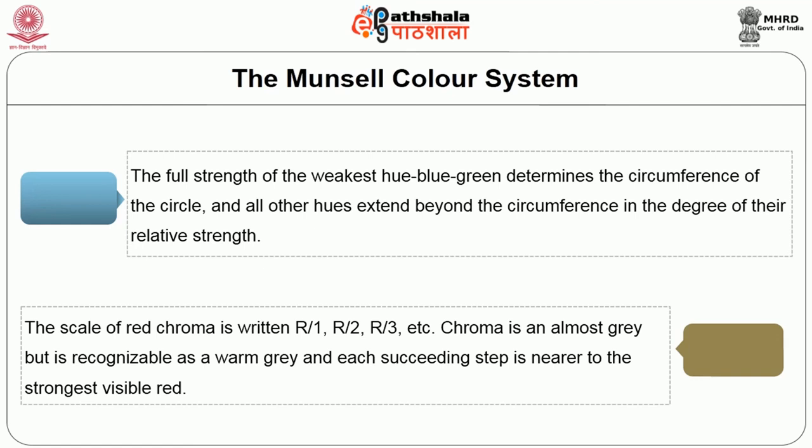Chroma R1 is almost gray but recognizable as a warm gray, and each succeeding step is nearer to the strongest visible red. In the Munsell notation, symbols are expressed as hue, value, chroma. The five principal hues at their fullest intensity with permanent pigments would read: R 4/14, R 8/12, G 5/8, B 4/8, P 3/12. The five intermediate hues would rate: YR 5/12, GY 7/10, BG 5/6, PB 3/12, and RP 4/12.